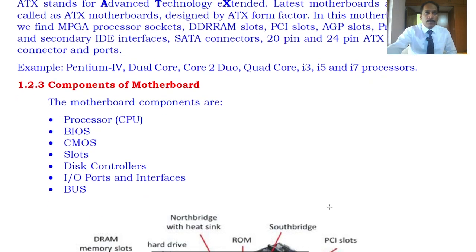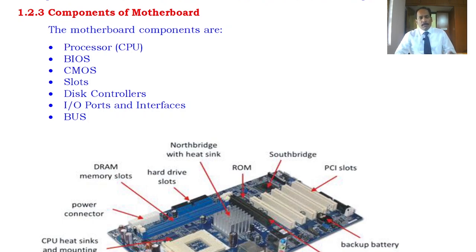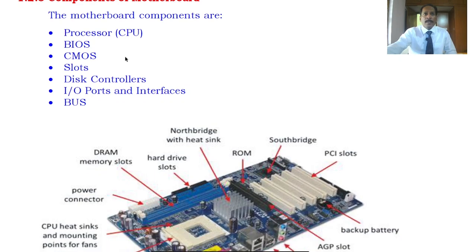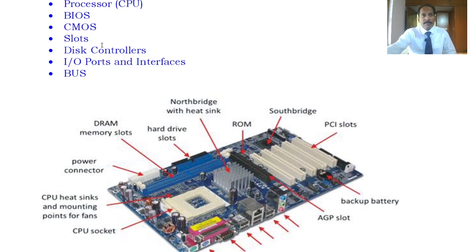Now let us learn more about the different components of the motherboard. When we talk about components of the motherboard, everything you see in the computer — whether inside or outside — all components of the computer will be there on the motherboard. That means everything including your keyboard, mouse, and speakers — whatever you see on the computer — all are connected to the components of the motherboard. You can see that there is a processor, a BIOS — basic input output system — a CMOS — complementary metal oxide semiconductor — battery, slots, disk controllers, input/output ports, interfaces, and connecting buses.